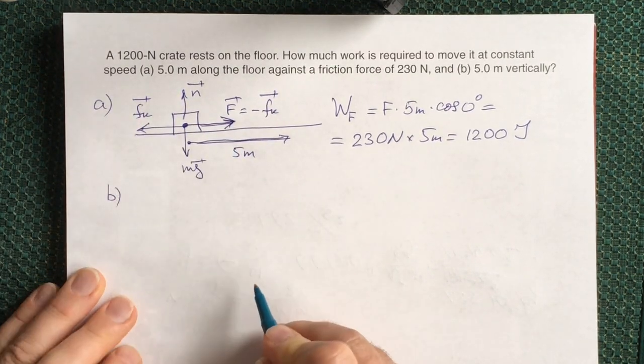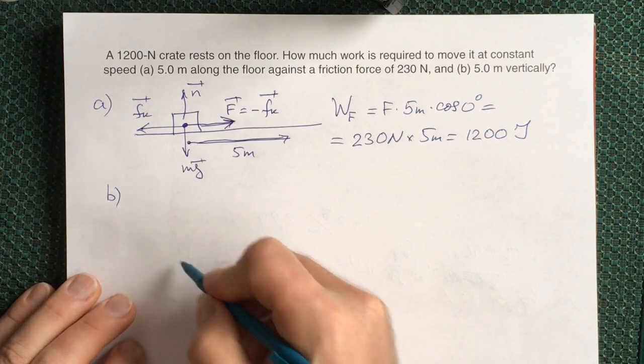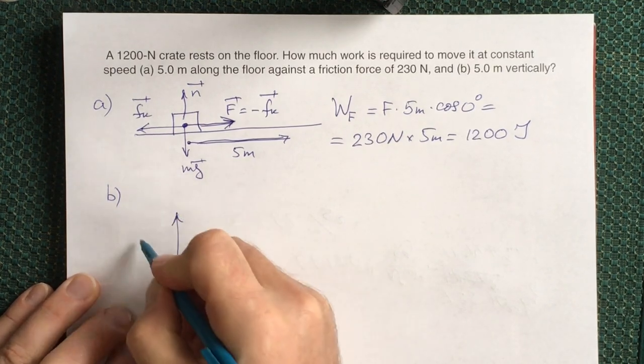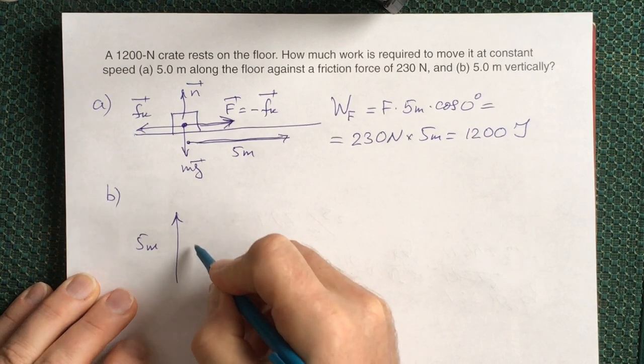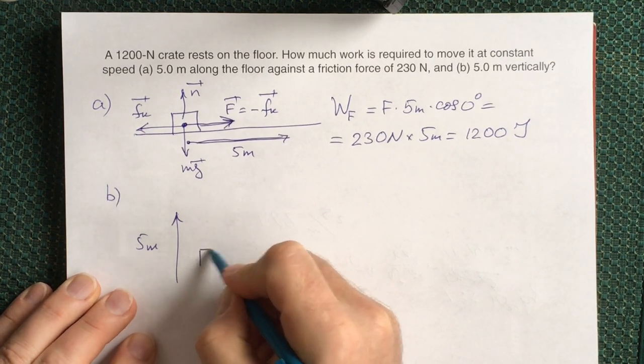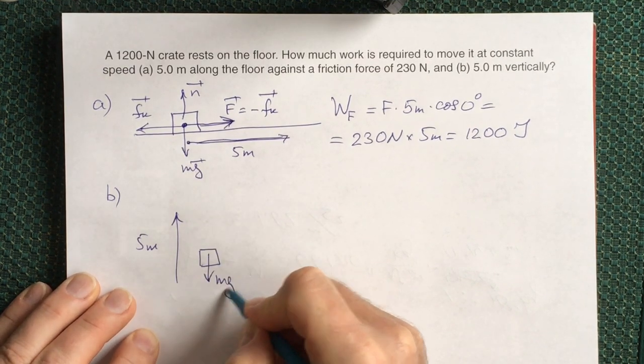Part B. Now you have to move your crate vertically at the same distance 5 meters. At this motion you have to overcome gravity force which is mg.